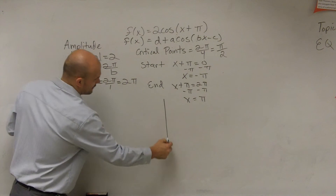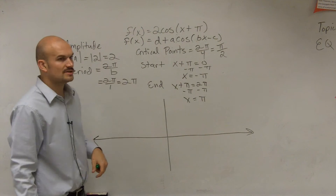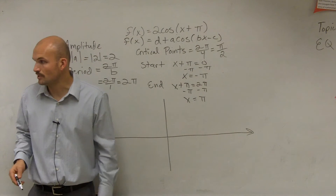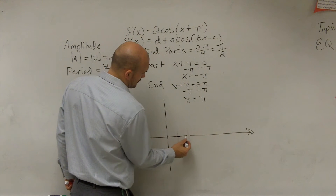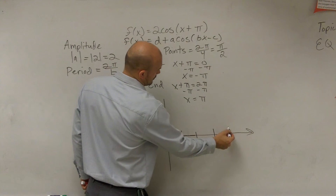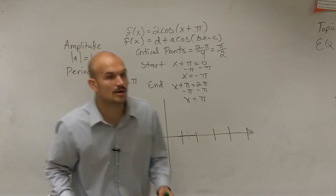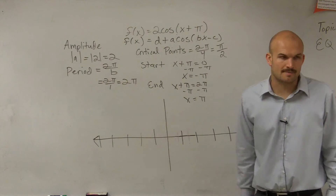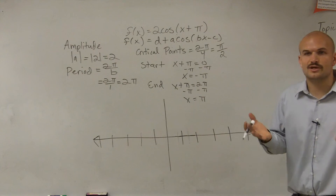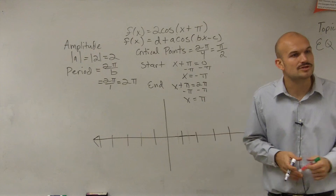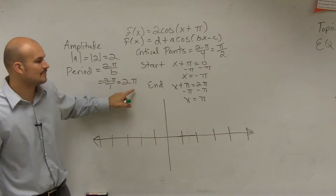Let's take a look at what this graph is going to look like. I'm going to mark intervals where my critical points will be — each interval creating a critical point that could be a maximum, minimum, or x-intercept. I like to first graph the parent function so I can see exactly what my function looks like. There's no difference in period here since my function has the same period as the parent function.